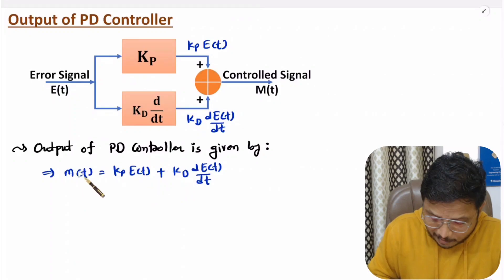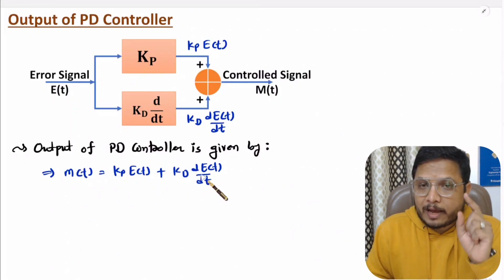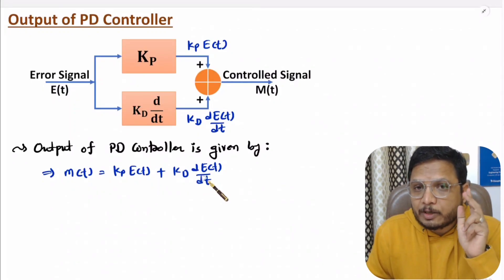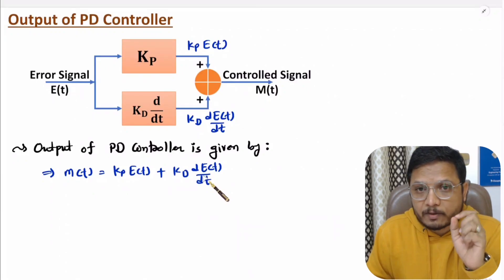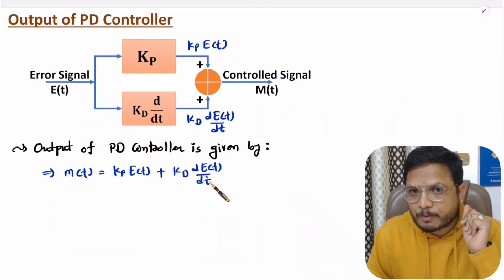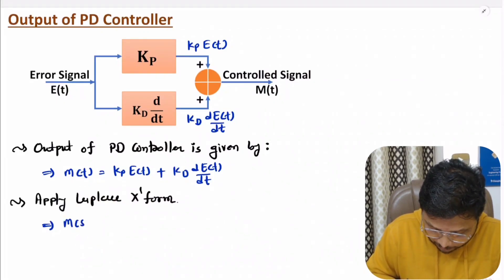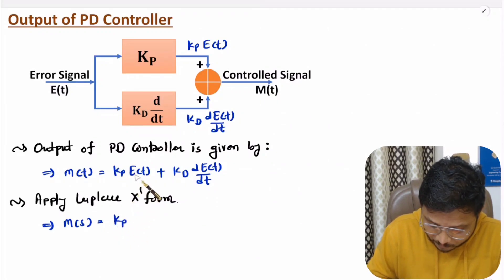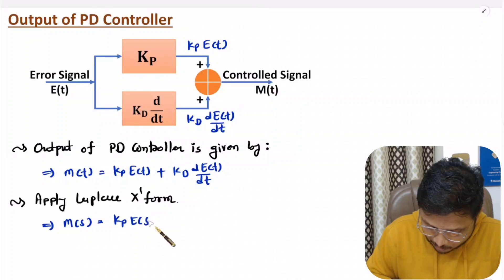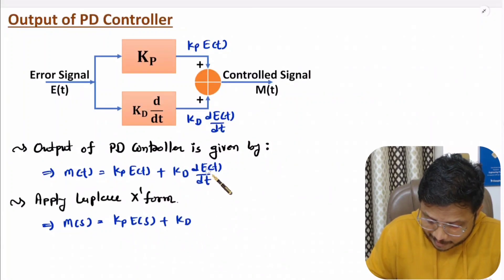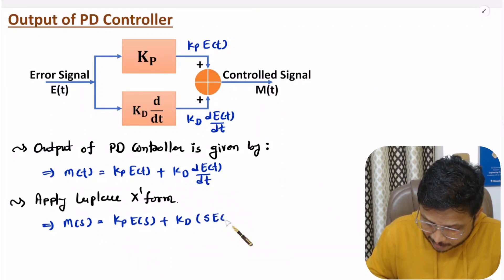We have the signal in the time domain. To obtain the transfer function we need the output in the frequency domain, so let us apply the Laplace transform. Applying Laplace transform, m(t) becomes M(s), Kp remains as is, e(t) becomes E(s), and the single differentiation of e(t) with respect to time becomes s·E(s). So the output is M(s) = Kp·E(s) + Kd·s·E(s).